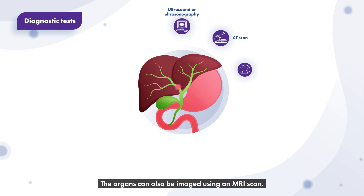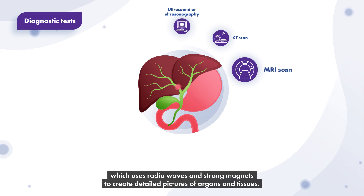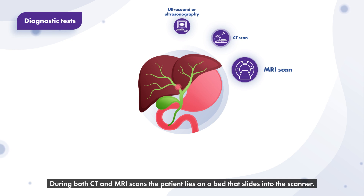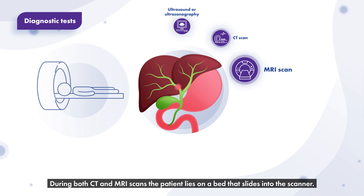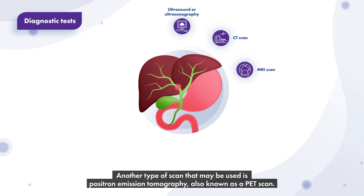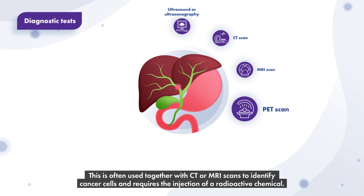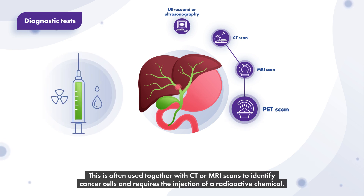The organs can also be imaged using an MRI scan, which uses radio waves and strong magnets to create detailed pictures of organs and tissues. During both CT and MRI scans, the patient lies on a bed that slides into the scanner. Another type of scan that may be used is positron emission tomography, also known as a PET scan. This is often used together with CT or MRI scans to identify cancer cells and requires the injection of a radioactive chemical.